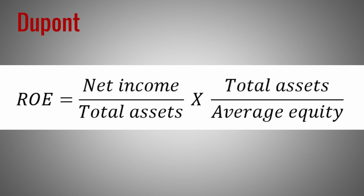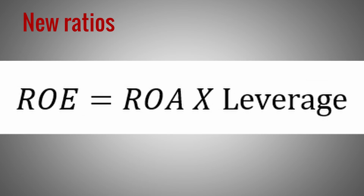Now we are free to move the numerators and denominators around and we get the following formula. We have two new ratios: (1) return-on-assets, which equals net income over total assets, and (2) leverage, which equals total assets over equity. This drilling down into the underlying ratios clarifies what drives return-on-equity.